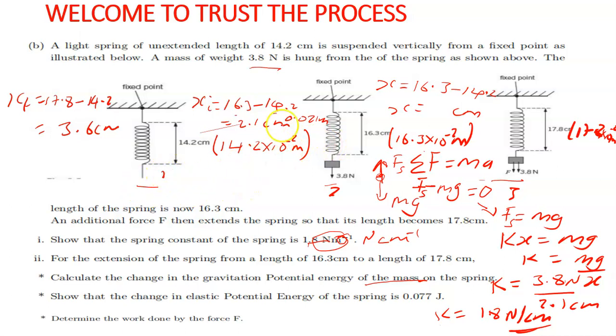Between diagram 1 and diagram 3, that's where you have the final extension. According to these two figures, you have 17.8 centimeters as your final length, initial length still 14.2 centimeters. 17.8 minus 14.2 gives 3.6 centimeters, which is 0.036 meters.